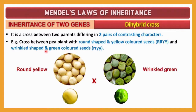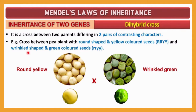For example, we can take a cross between a pea plant having round shape and yellow color seeds. This plant has the genotype RRYY — round shape is a dominant gene (homozygous dominant), and yellow color is also dominant over the other color. So capital RR and capital YY are both dominant: one for round shape and one for yellow color seeds.